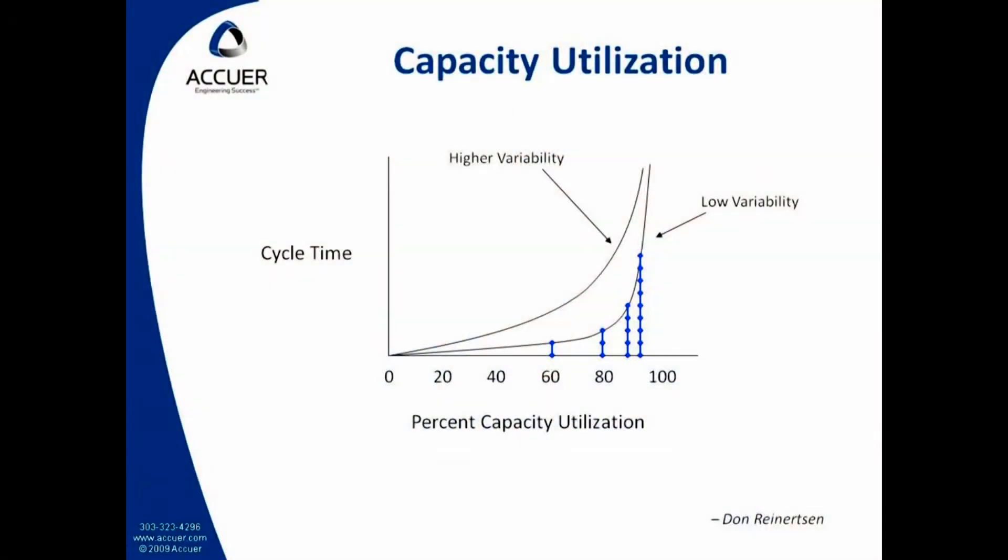Let me tell you a secret. The only reason they can run at such a high percent capacity utilization is because they have highly repetitive, low variability processes. They do the same thing over and over, and it always takes about the same amount of time. Now, if they had some processes that took twice as long as they expect, they would actually need more spare capacity. And the reason is that this curve actually starts turning up sooner for processes with more variability.